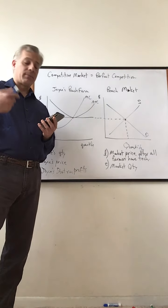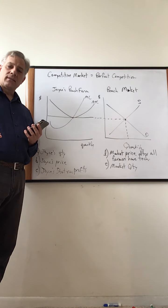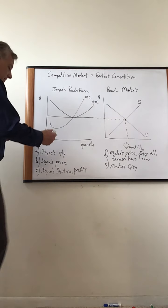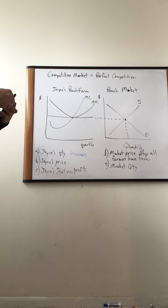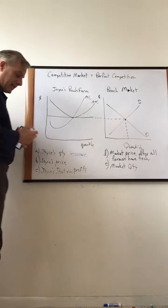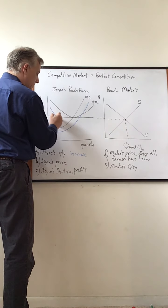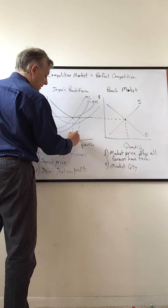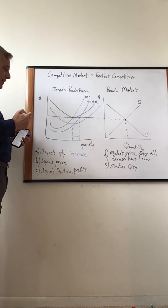So they've got one-third off course already. You can deduce if there are lower costs through technology, what is likely to happen to the quantity of peaches produced? Well, it's going to increase. Her quantity is going to increase. If we wanted to look at this graphically — it reduces the cost — we draw a new marginal cost and a new average total cost. You can see the quantity has increased with the new MC.